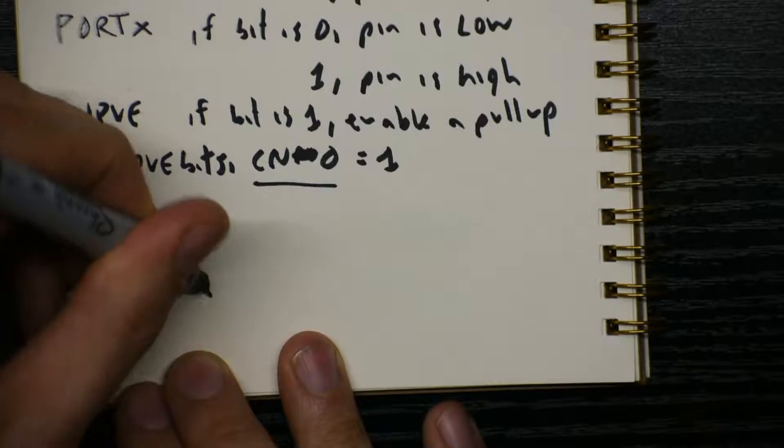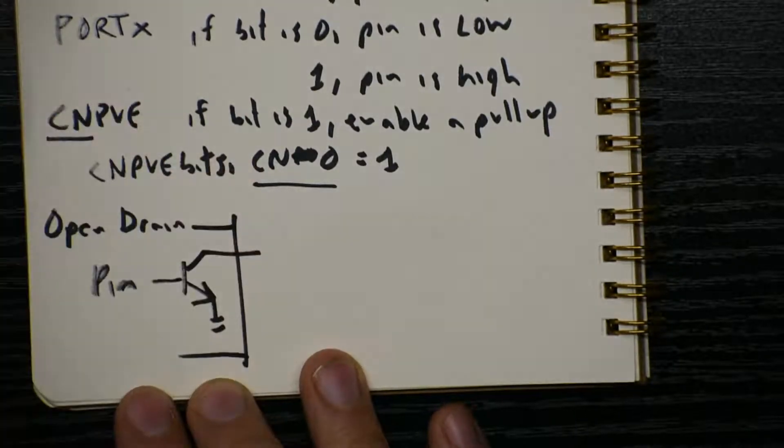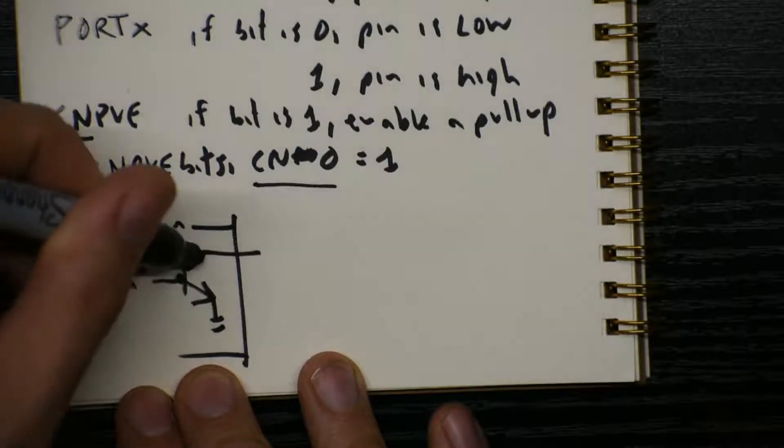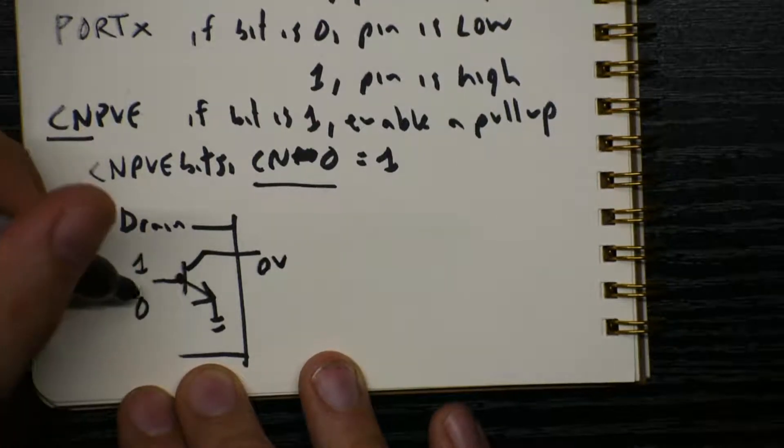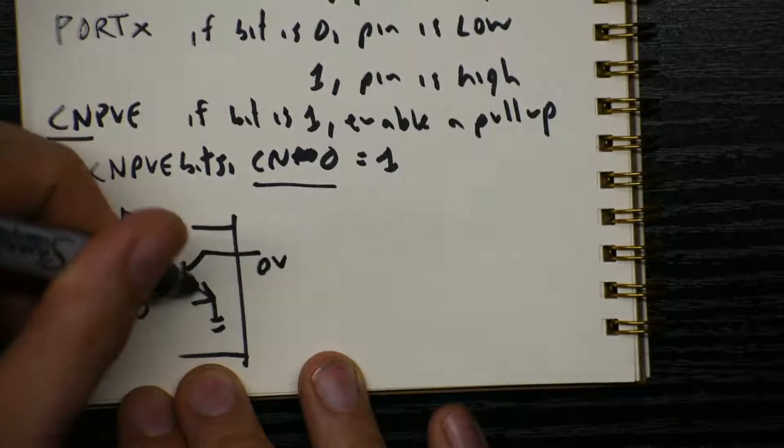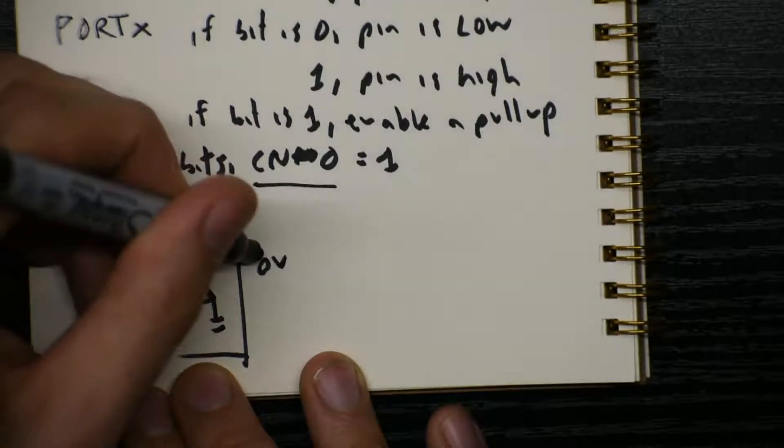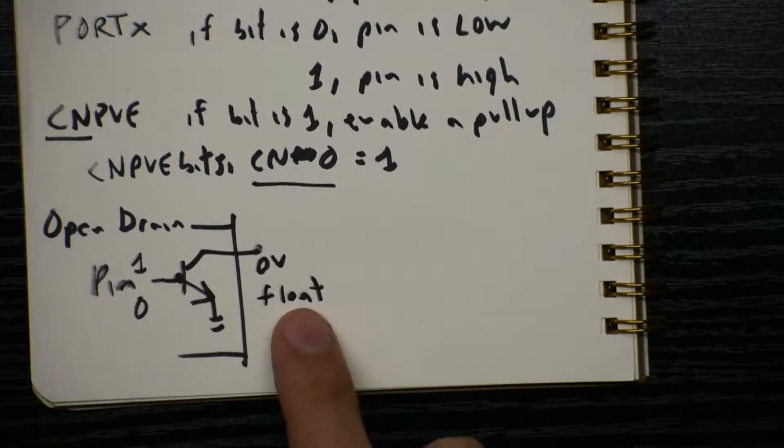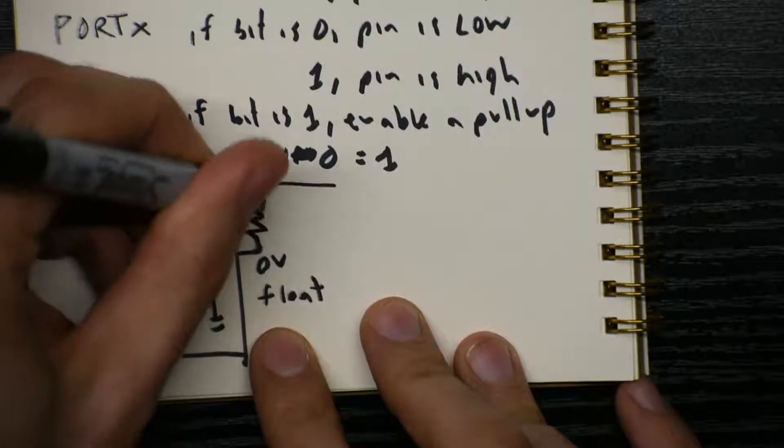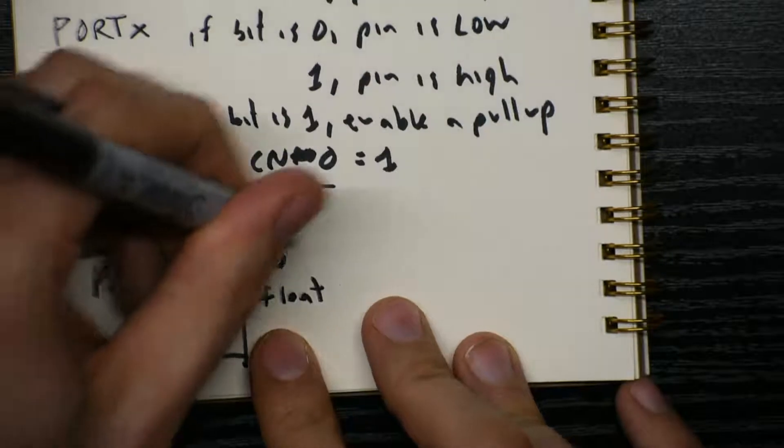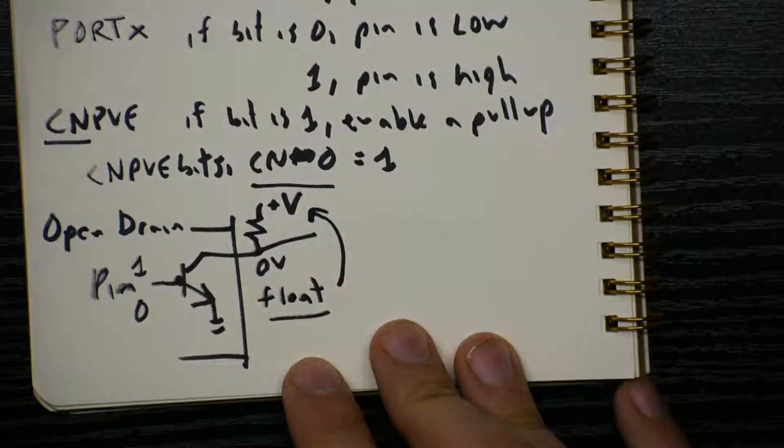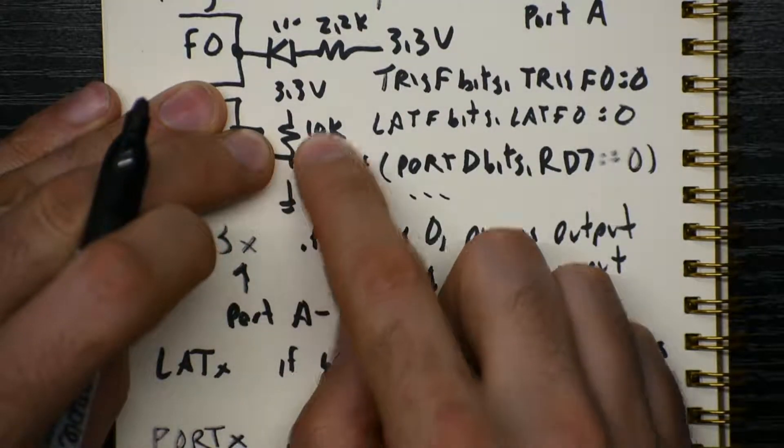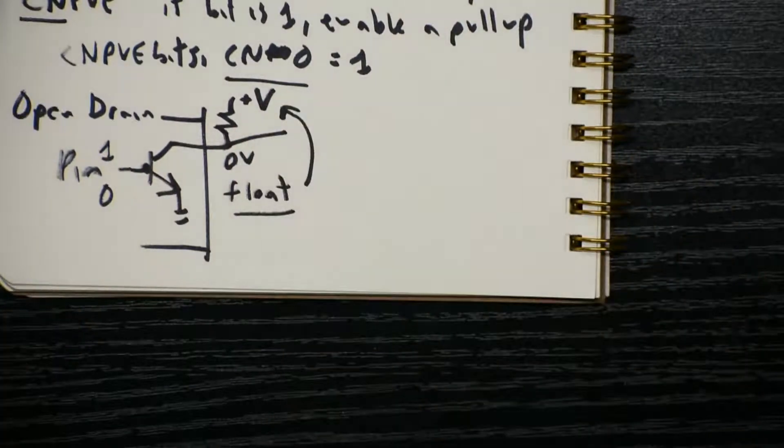So open drain means that our pin doesn't really go to the output of the chip anymore. Instead, it would go to the base of a transistor. Here's inside of the pick. And when we tell our pin to go high and low, it's controlling the base of this transistor, which means when the pin is high, this switch is closed, so the output would see 0 volts. But when the pin is low, now the gate is open, so no current will flow. And what that means is that this voltage will float. Floating is generally bad. That means it's not hooked up to ground, it's not hooked up to power, it's just some wandering voltage. How do you prevent a floating pin from wandering? Well, you add a resistor up to some voltage.